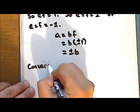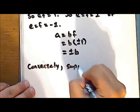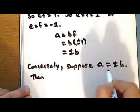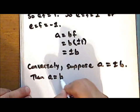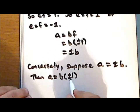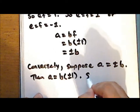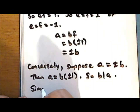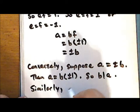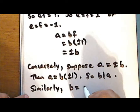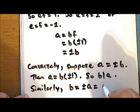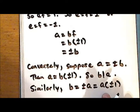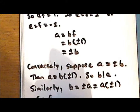Conversely, suppose that a equals plus or minus b. Then a equals b times plus or minus one. In either case, a is an integer multiple of b, so b divides a. Similarly, b equals plus or minus a, which is a times plus or minus one. Again, in either case, b is an integer multiple of a, so a divides b.